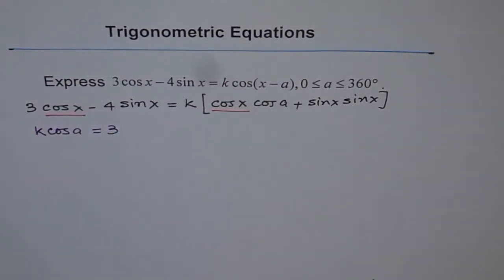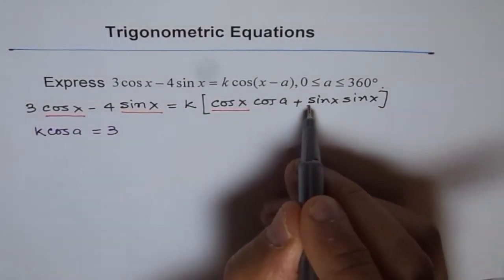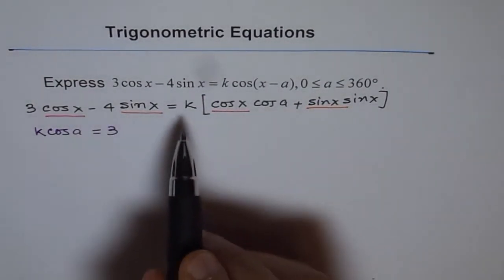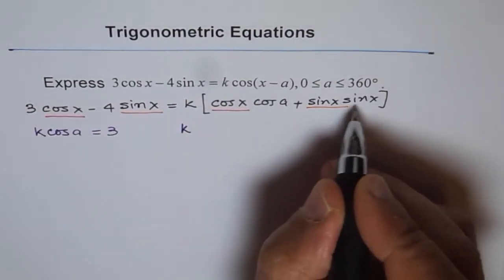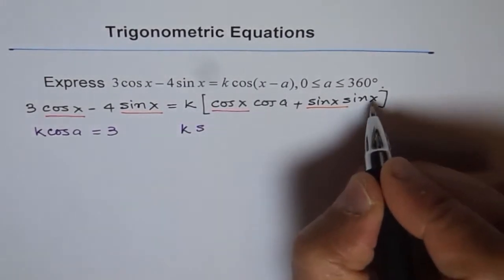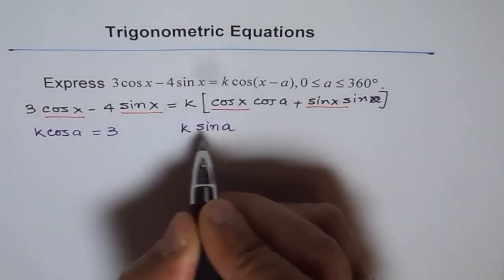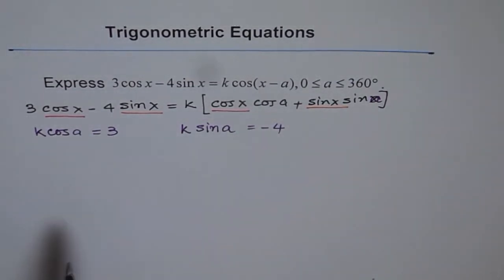Similarly, let's now compare the coefficients of sin x. We have sin x here and sin x here. The coefficient of sin x here is minus 4, and there it is k times sin a. Therefore, k times sin a equals minus 4. By comparing the coefficients, only then can these two expressions be the same. That is the trick involved in solving this.